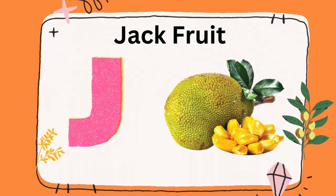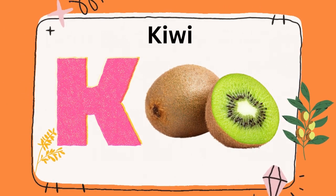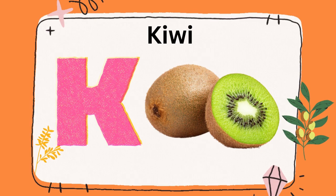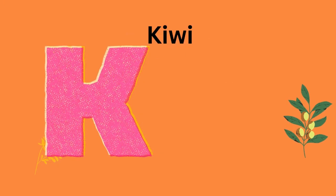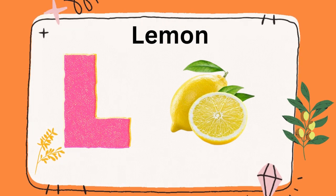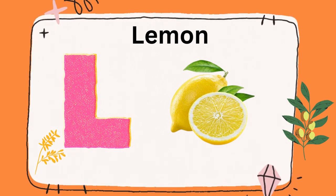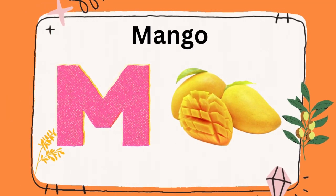J is for jackfruit, J is for jackfruit. K is for kiwi, K is for kiwi. L is for lemon, L is for lemon.